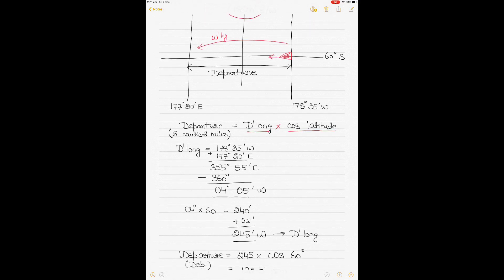D long in this case will be calculated between the two longitudes. Since they are differently named, one is in west and the other one is in the east side, you will of course add it because different names you add. Once you add it, you see the value is 355 degrees 55 minutes. It's named east initially because you conceptually feel as if it's traveling in an easterly direction because it's going from west to east.